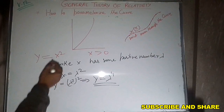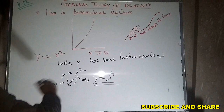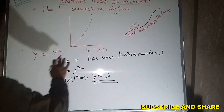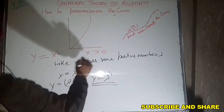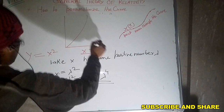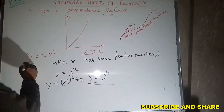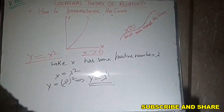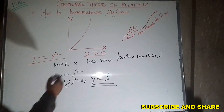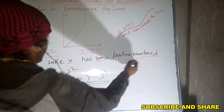Here is another example of parameterization of a curve. This is y = x², which is a parabola. For this parabola, x is always greater than 0. This is the x-axis and this is the y-axis. The equation for this parabola is y = x², and we have to parameterize this one.